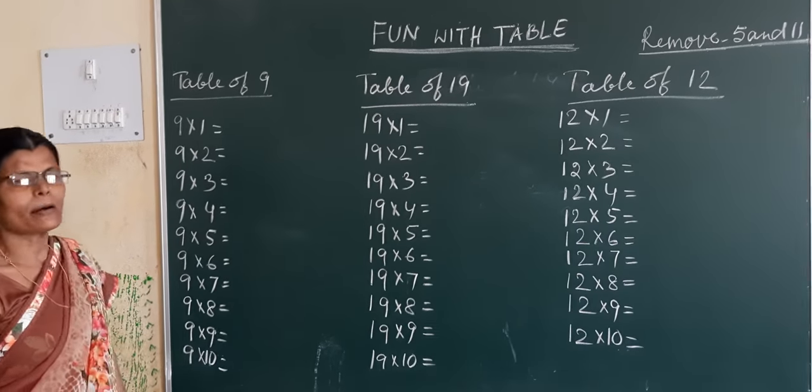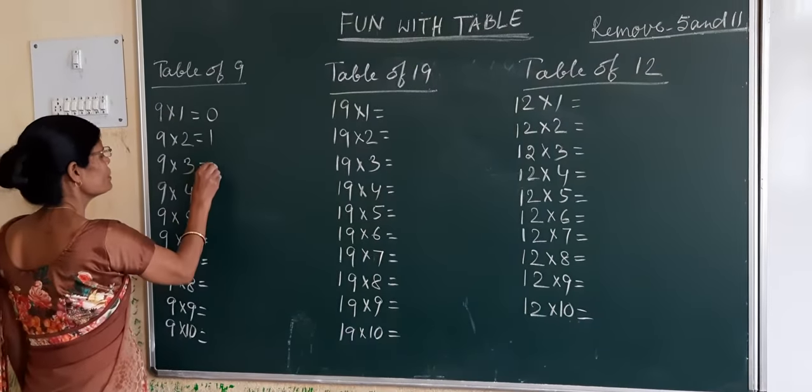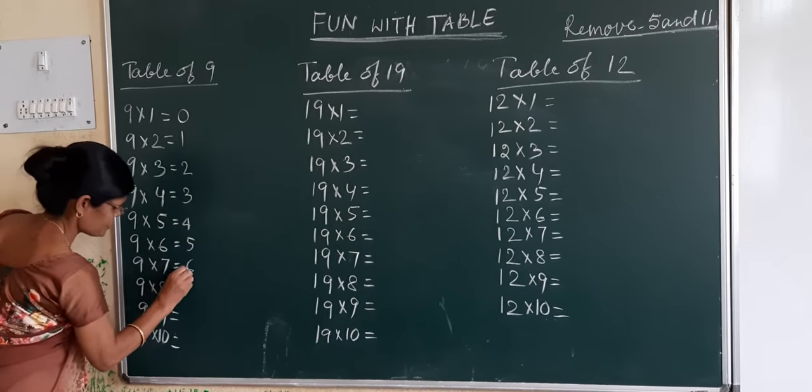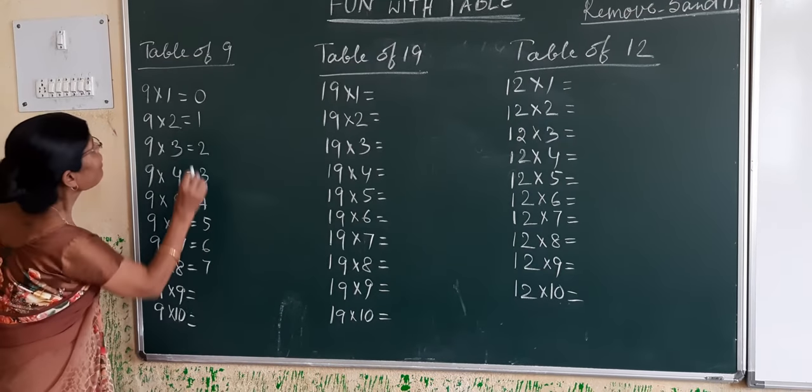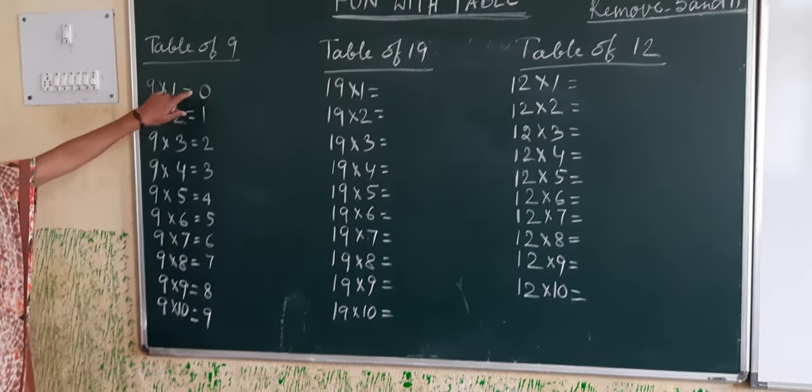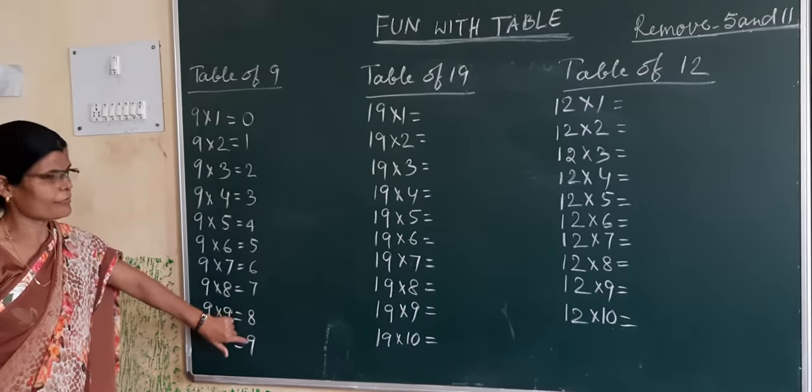Write the numbers from 0 to 9: 0, 1, 2, 3, 4, 5, 6, 7, 8, 9. Forward counting.